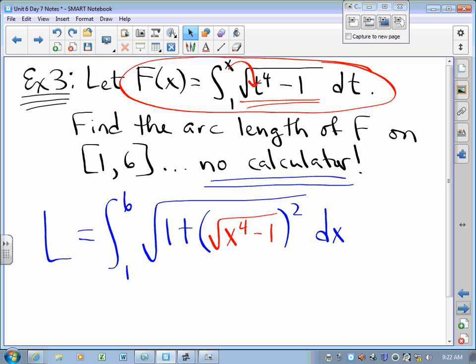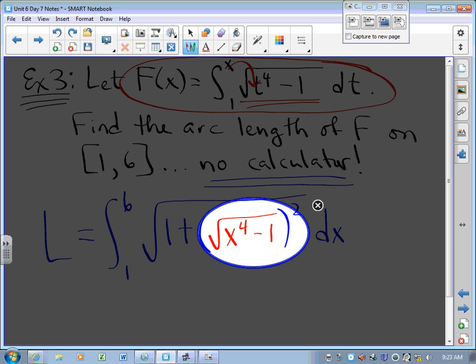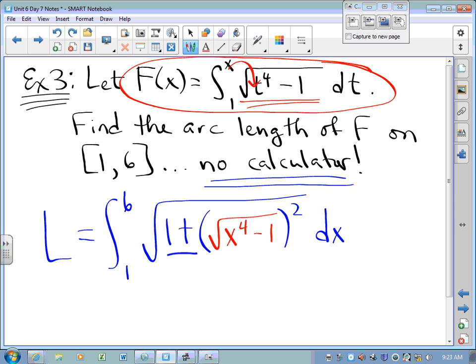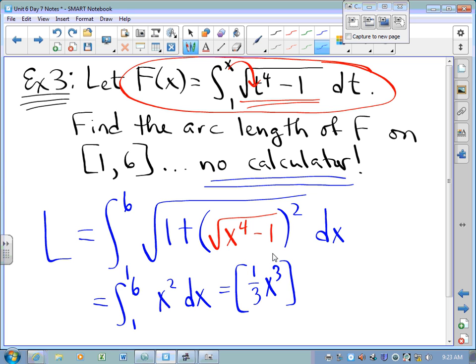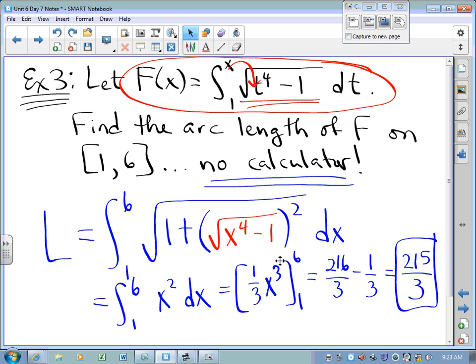So what happens inside that radical? I've got radical x to the 4th minus 1 squared. So this is x to the 4th minus 1 plus 1 square root. So this is the integral from 1 to 6 of x squared dx, which is 1/3 x cubed from 1 to 6. That's 216/3 minus 1/3, which is 215/3.